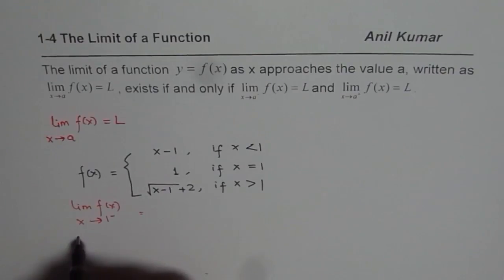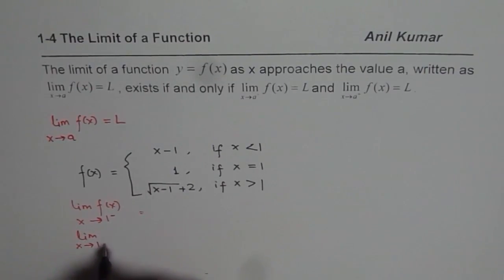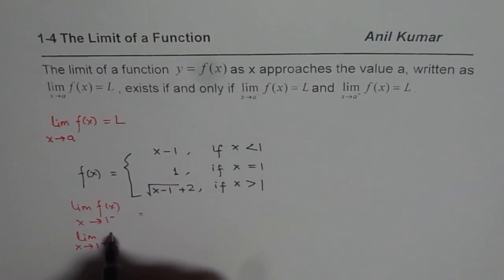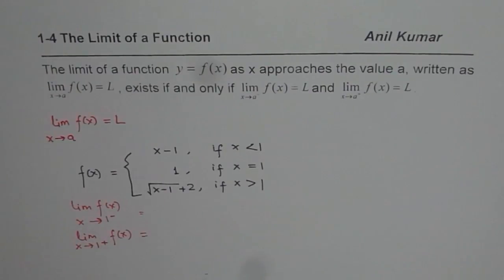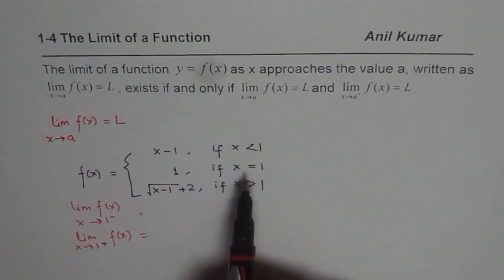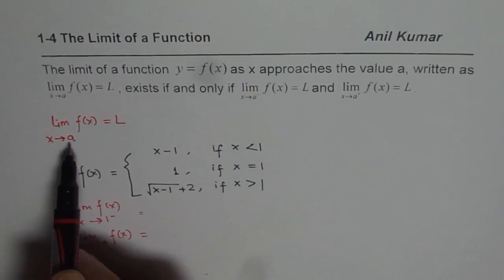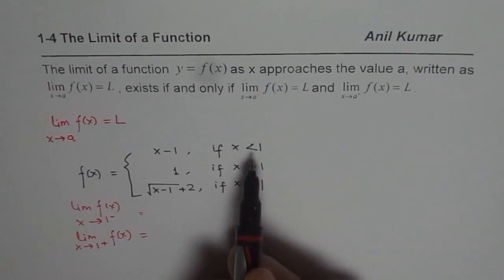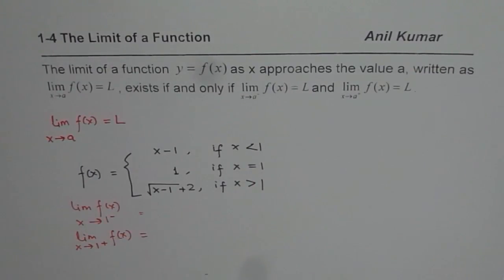And what is the value of f of x as x approaches 1 from the positive side, that means from the right side? This is what we are trying to understand. If both these limits exist and if they are exactly the same, then we say that the limit of the function exists at 1. So in our case, a is going to be 1.